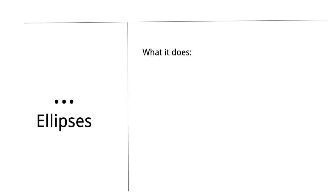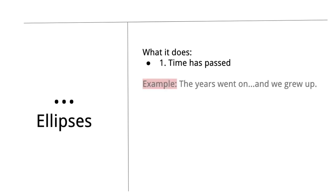Ellipses, in my opinion, have too many jobs. But we're going to talk about three of the most common uses of the ellipsis. The first one is to show that time is passing — like, 'the years went on...and we grew up.' Obviously, there's a lot of time in between there, so it's just showing that time has marched on.